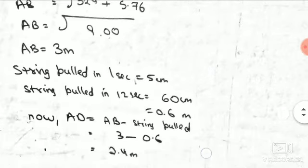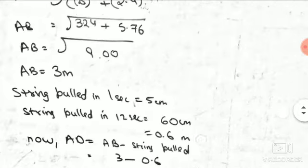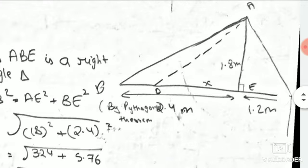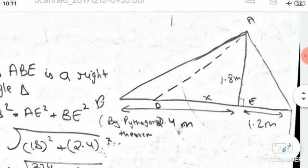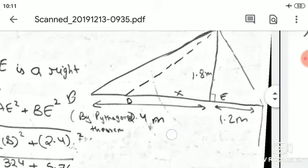Now 1.8, and this is 2.4. So we will find this distance, we will find it. And after this distance, we will find that. We will find this distance.